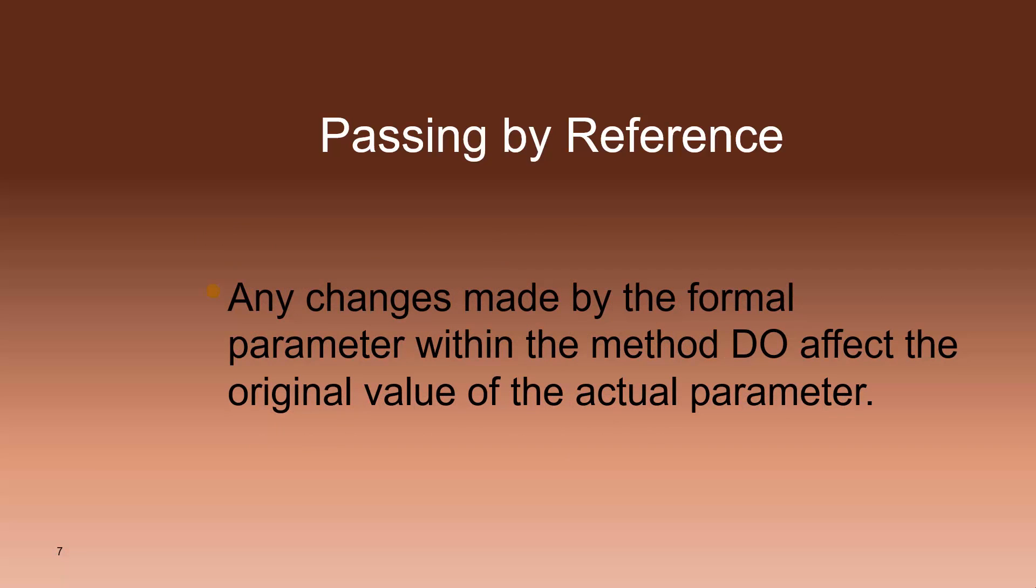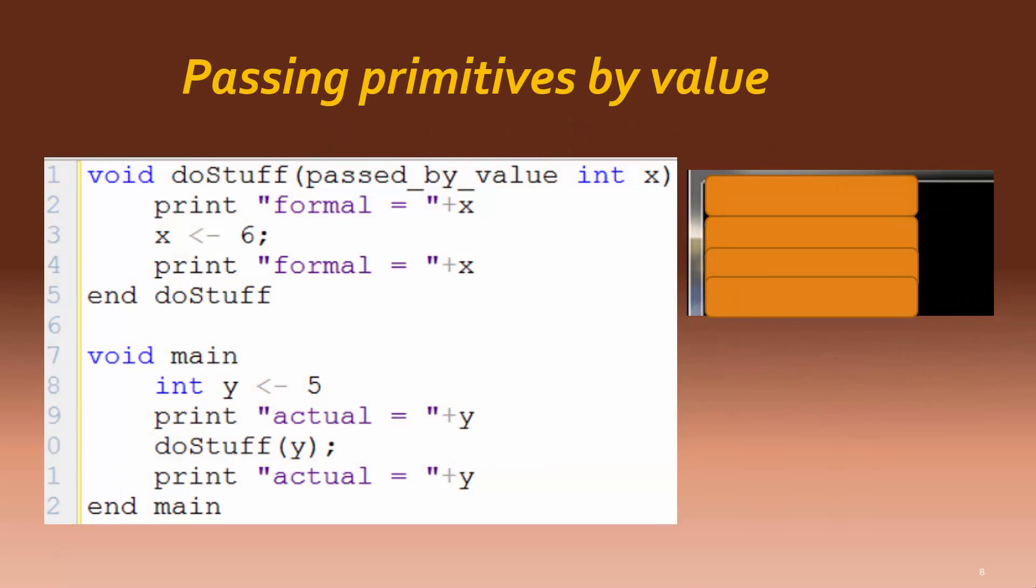This next sequence demonstrates the idea of passing by value and how changes to the formal parameter do not affect the actual parameter. In the pseudocode examples of parameter passing, all formal parameters will be explicitly labeled as passed by value or passed by reference, as you can see with this program example. Take a moment to pause this video, study the program, and see if you can follow the sequence and predict the output.